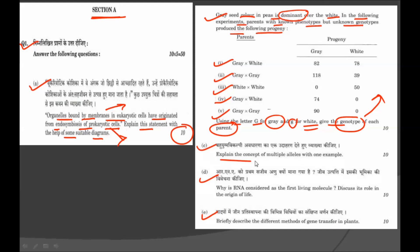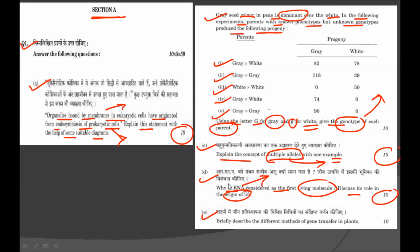The third sub-question C: explain the concept of multiple alleles with examples. There is a concept in genetics called multiple alleles; you have to explain it with one example, for 10 marks. Sub-question D: why is RNA considered the first living molecule? Discuss its role in the origin of life, for 10 marks. Sub-question E: briefly describe the different methods of gene transfer in plants, a question from the biotechnology part, again for 10 marks.